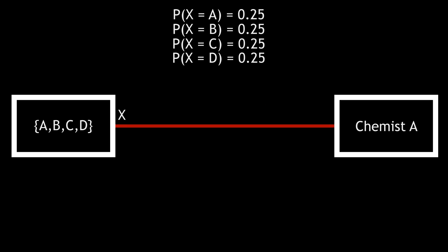Let's start by considering chemist A, who gets a message where each letter has an equal probability of occurring. Chemist A will consider a series of yes or no questions. Now, they could just ask, is it A, is it B, is it C, but that's very inefficient. The most efficient way is to split the letters up into groups, A and B, and C and D.